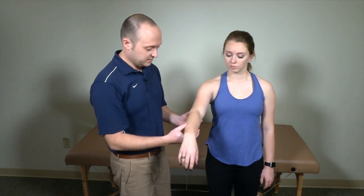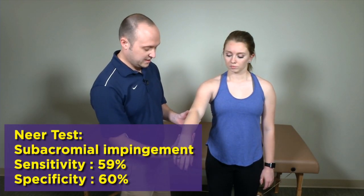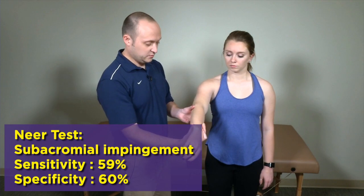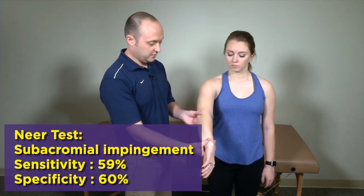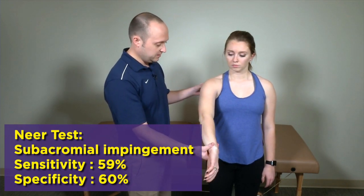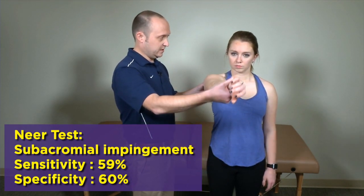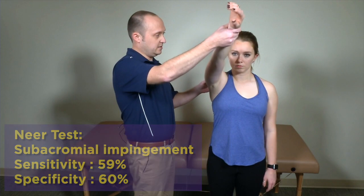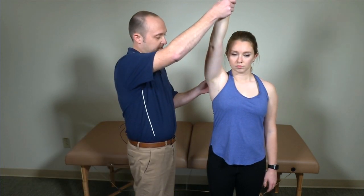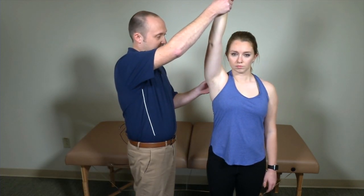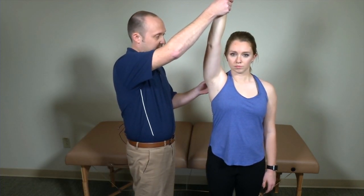Our other subacromial impingement test is the Neer's test. This is where you internally rotate at the shoulder and bring them up into frontal flexion, looking again for that general anterior shoulder pain as you get towards the end ranges of frontal flexion.